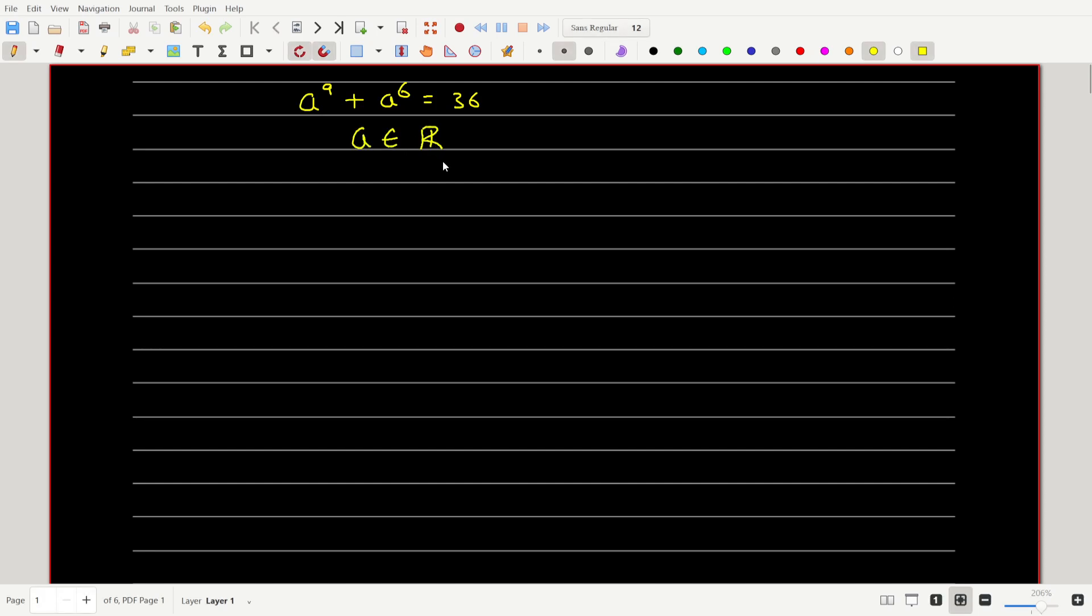So we have to find real values of a. Let's begin. Let's start by some simplification on the left hand side. So let's take a power 6 common and we get a power 6 times a cube plus 1 equals 36.